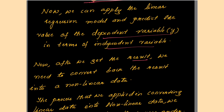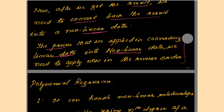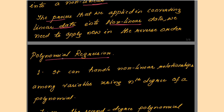After applying the linear regression model and getting the result, you need to convert that result back into non-linear data. Because you started with non-linear data, converted it to linear, applied linear regression, and got the result — now the result has to be converted back to non-linear data. These steps relate to the transformation method; now we will move to polynomial regression.